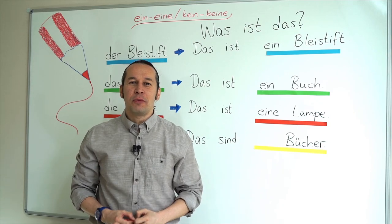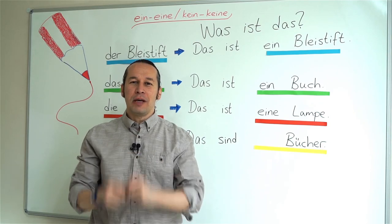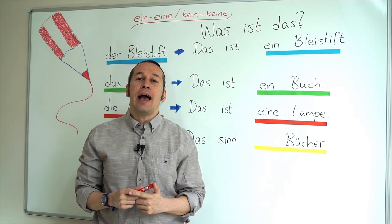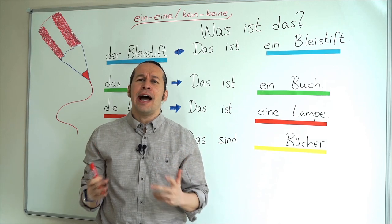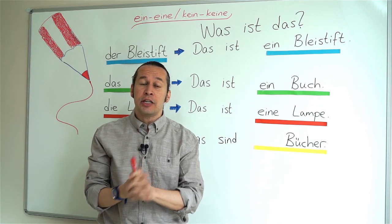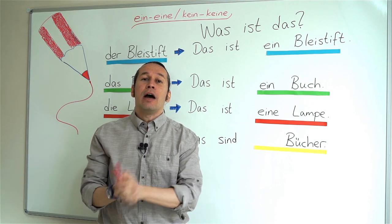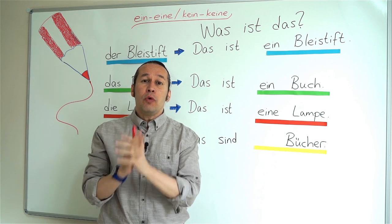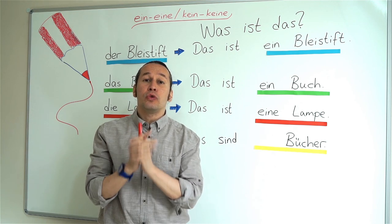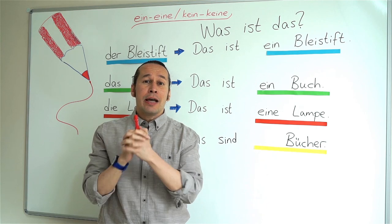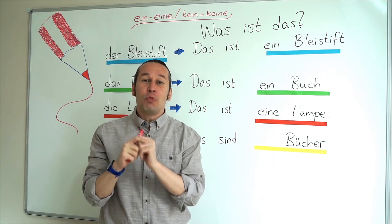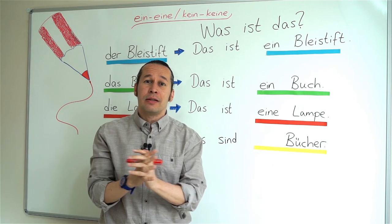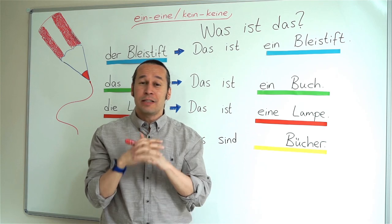Hello everyone, this is your German teacher Erhan Özdemir from Istanbul, Turkey. In this video we are going to learn ein, eine, kein, keine. What is ein, eine, kein, keine? We have this already in English, which stands for 'a', 'an', or 'not'. In German we have articles — those who didn't watch the articles video should watch it first to have an idea about this.